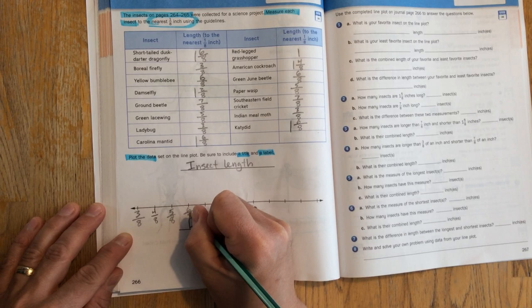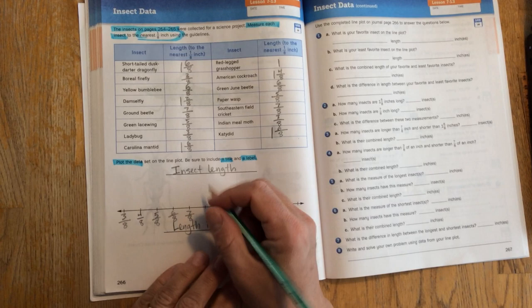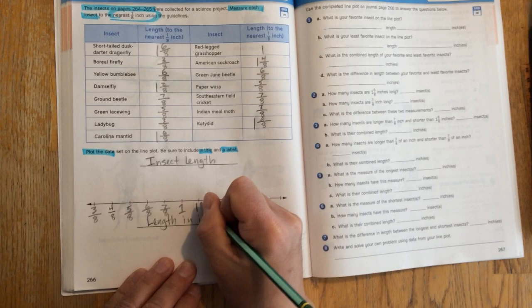Now when I get to 8 eighths, I'm going to remind myself that if I divide something into eight parts and I have eight of the parts, that's the same as one whole. Just like the red-legged grasshopper is one inch. That means it's 8 eighths.